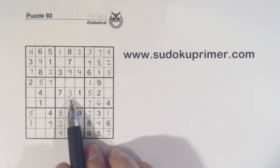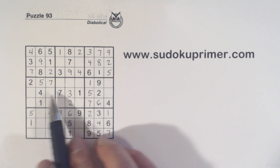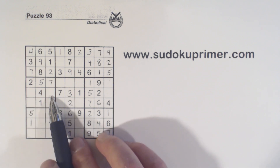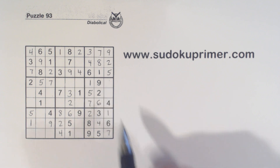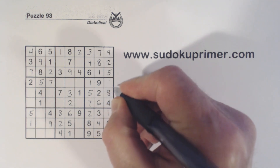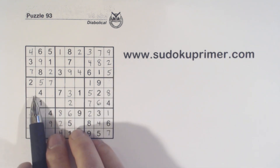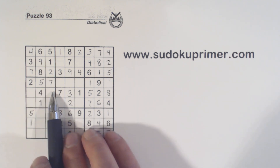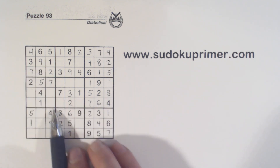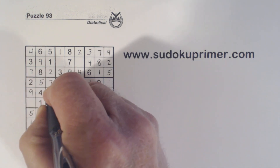Now we're missing six, eight, and nine. Six, eight — six, nine there — so that's an eight. So now we're only missing six and nine. And there's a nine there, so that's a nine and that's a six.